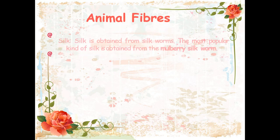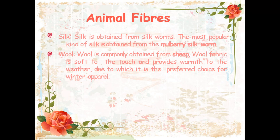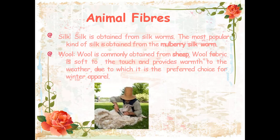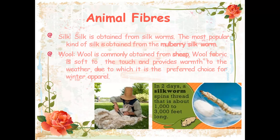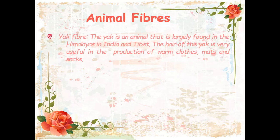Next are animal fibers. One of the most important animal fibers is silk, obtained from the silkworm. The most popular kind of silk comes from the mulberry silkworm. Next is wool, commonly obtained from the sheep. Wool fabric is soft to the touch and provides warmth, making it the preferred choice for winter wear. Did you know? In two days, a silkworm spins a thread about 1000 to 3000 feet long. Some other animal fibers include yak fiber — the yak is an animal largely found in the Himalayas, India and Tibet, and its hair is very useful in the production of warm cloths, mats and socks.